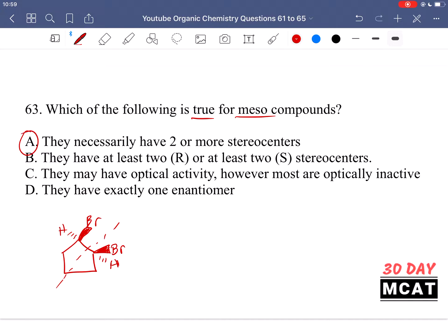Option A is true. It says they necessarily have two or more stereo centers. Yes, because if you think about this logically, if we had any molecule that just had one stereo center, then of course it would have optical activity, because we have chirality present and there's nothing else which cancels it out. You need at least two. Two is the minimum amount of stereo centers you need for something to be a meso compound, because that's the only way to get that plane of symmetry canceling it out.